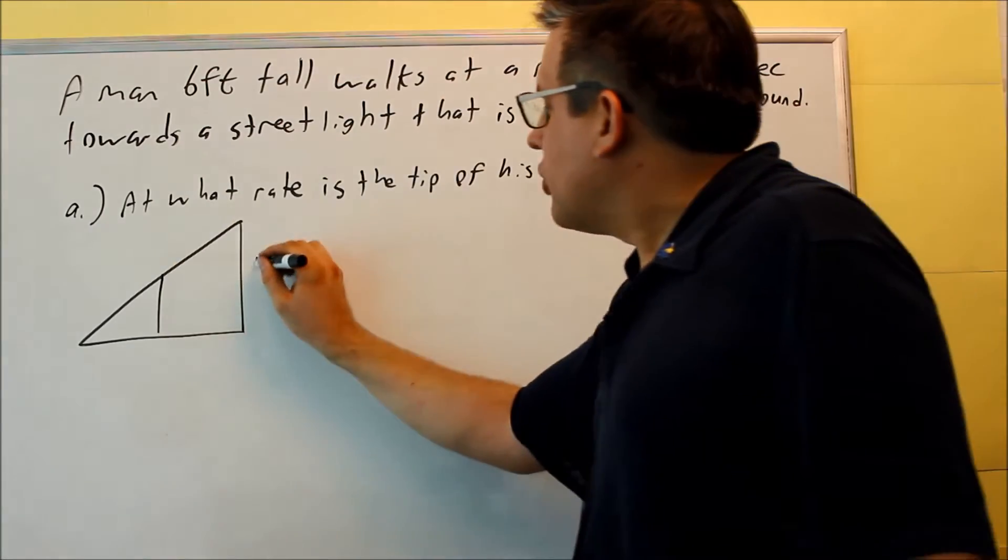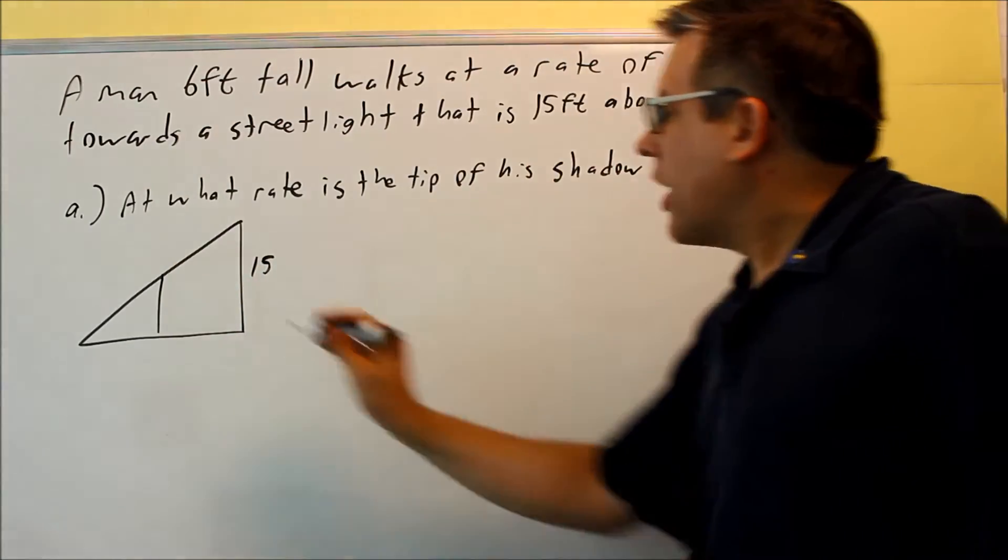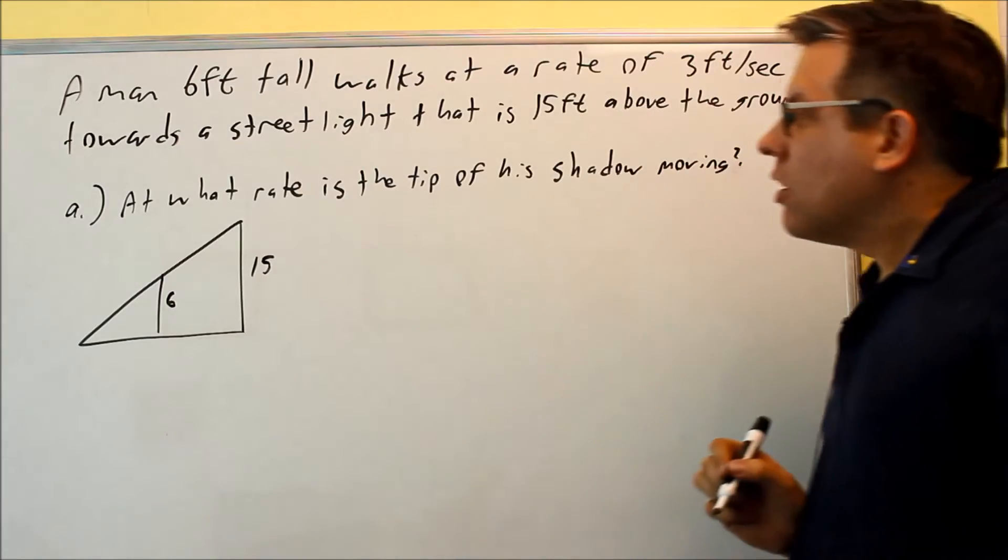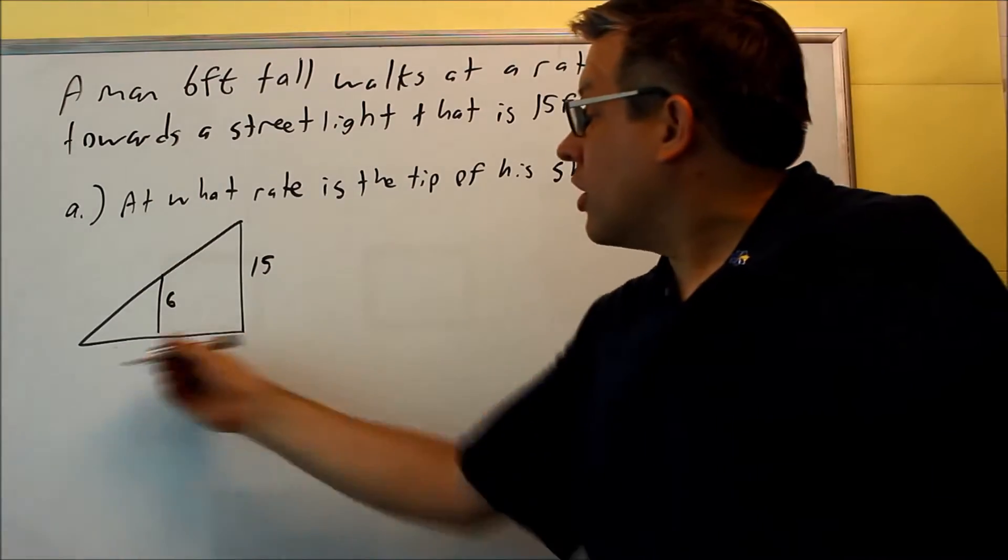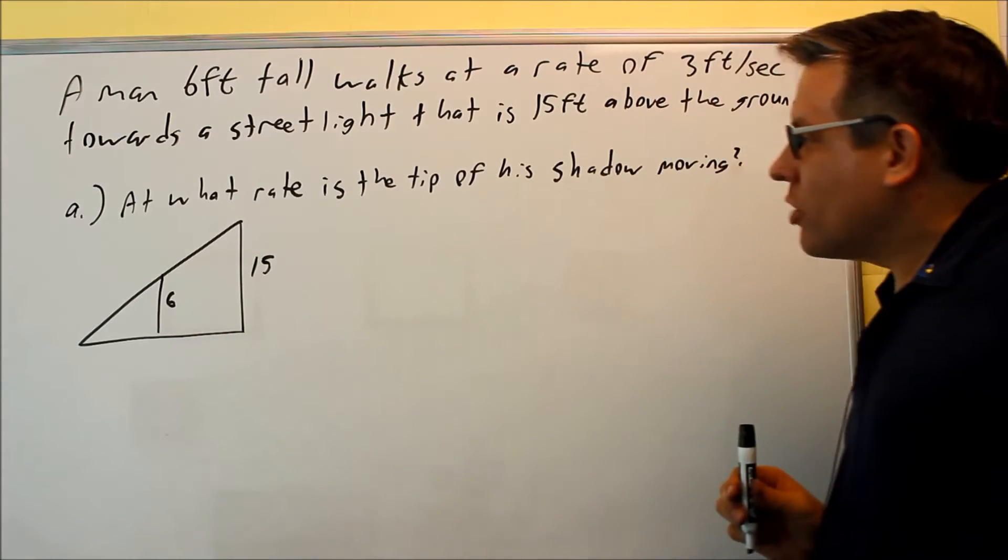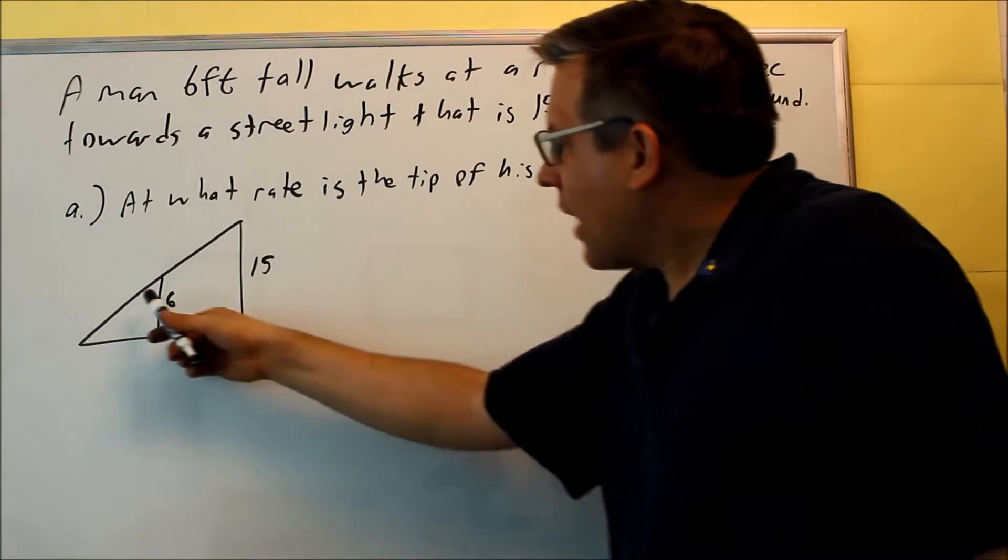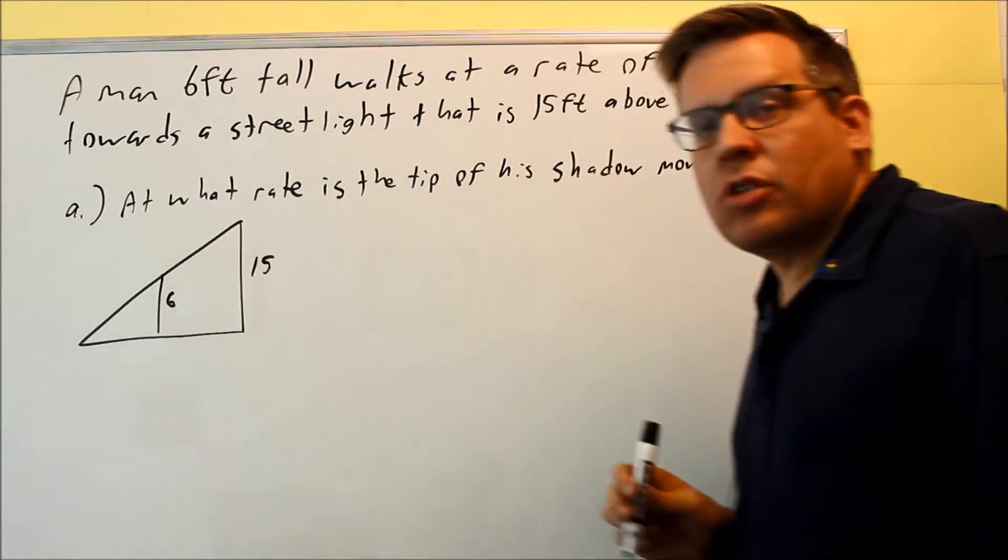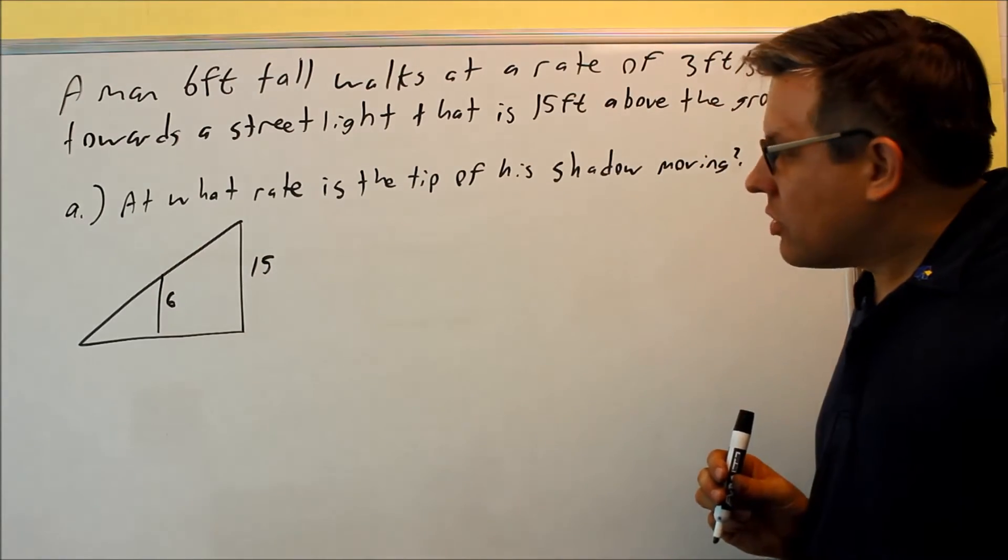So I got a 15-foot street light over here. I got a six-foot man right there. The man is walking this way to the right towards the street light, and then as he's moving the shadow is going to be changing of course.